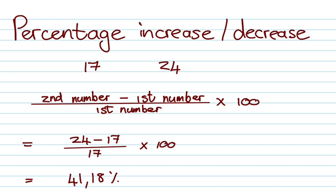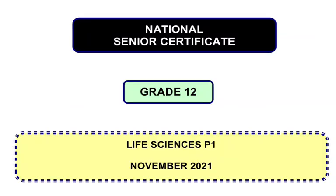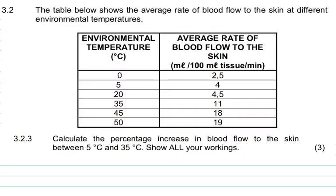So let's have a look at a question and this one comes out of Life Science Paper 1 November 2021. They give us a table in question 3.2. The table below shows the average rate of blood flow to the skin at different environmental temperatures. So we've got our environmental temperatures on the left and the average rate of blood flow to the skin on the right.